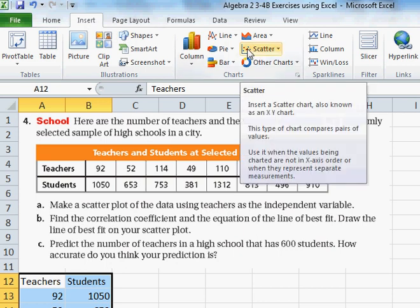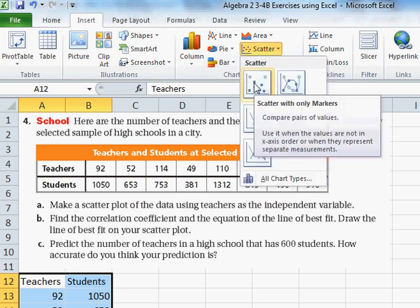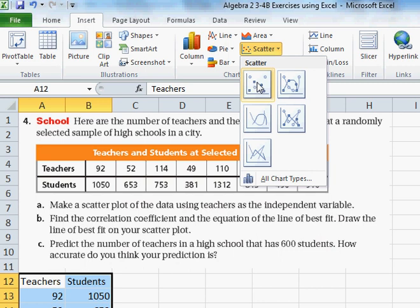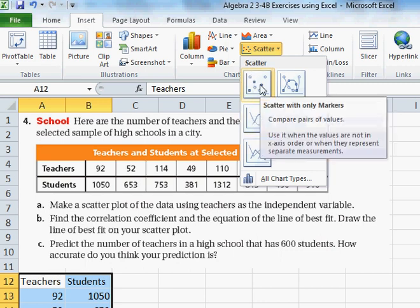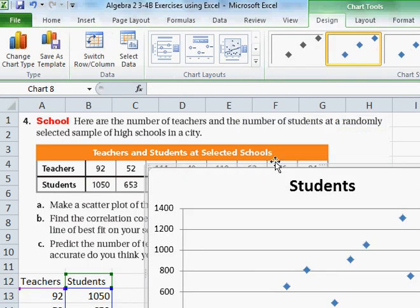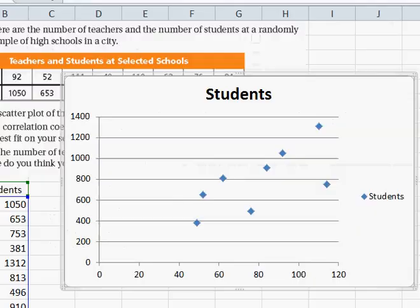We're going to insert scatter with only markers. You click on that and we get our scatter plot. There is the scatter plot. You notice we have our y-axis, which is the number of students, and our x-axis is the number of teachers.